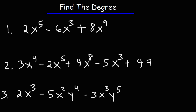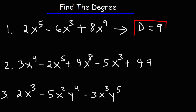Looking at the first one, this term has a degree of 5, this one has a degree of 3, and this has a degree of 9. Nine is the highest of what we have here, so this polynomial is going to have a degree of 9 — that's the highest term that we have.